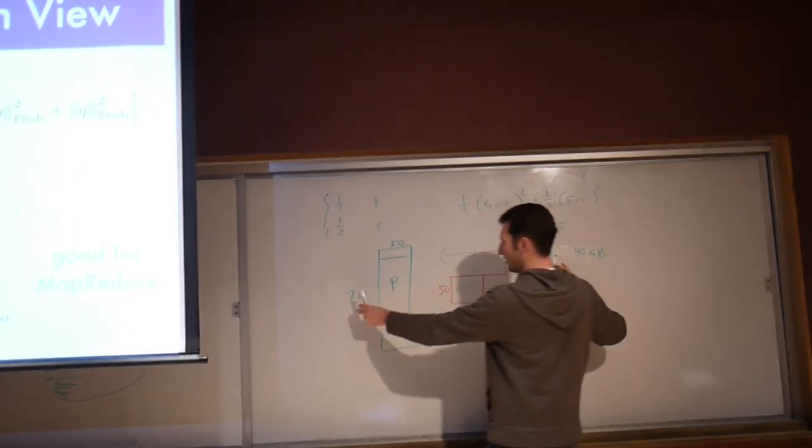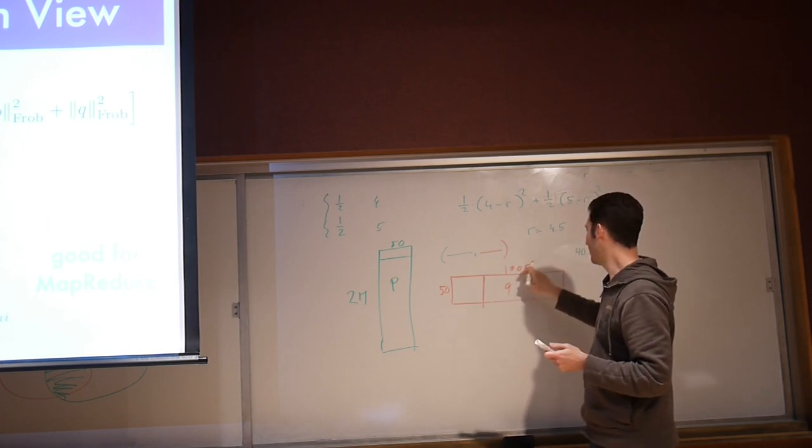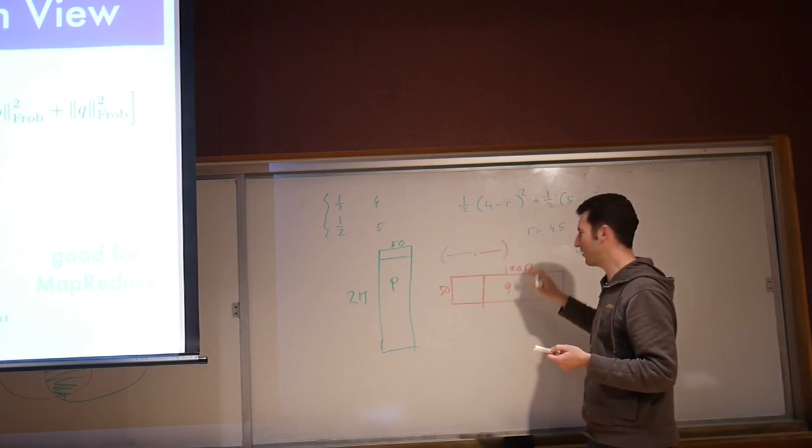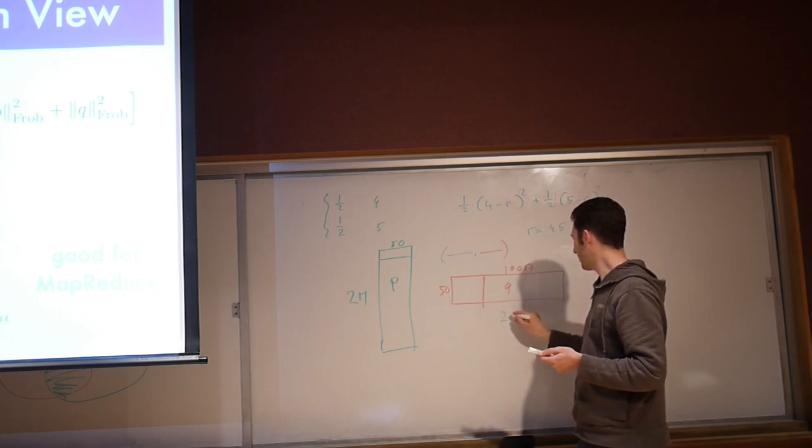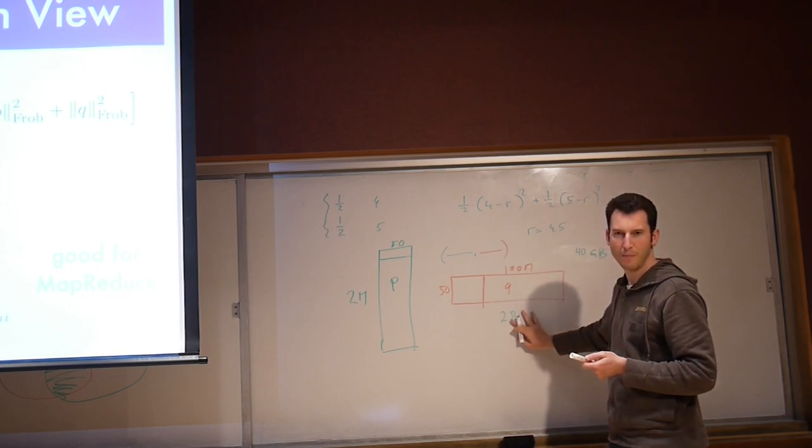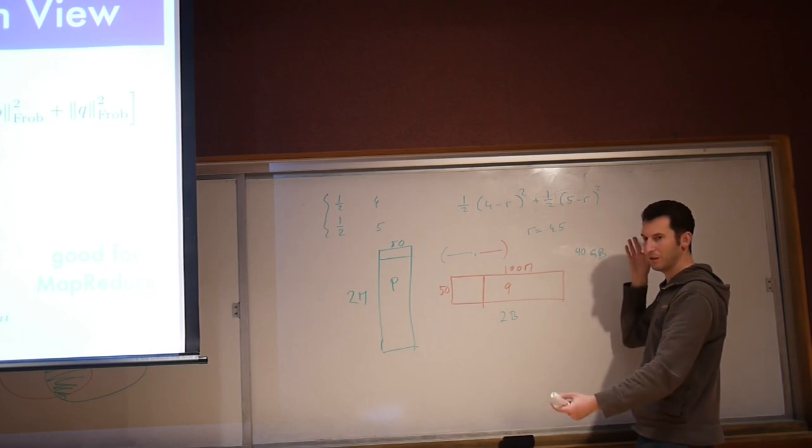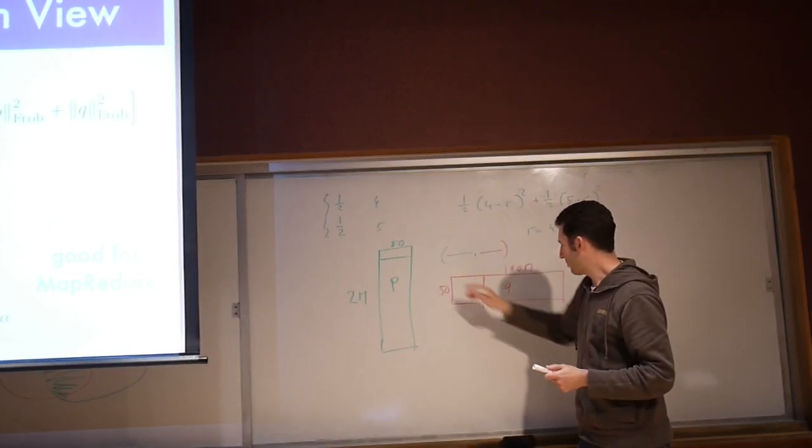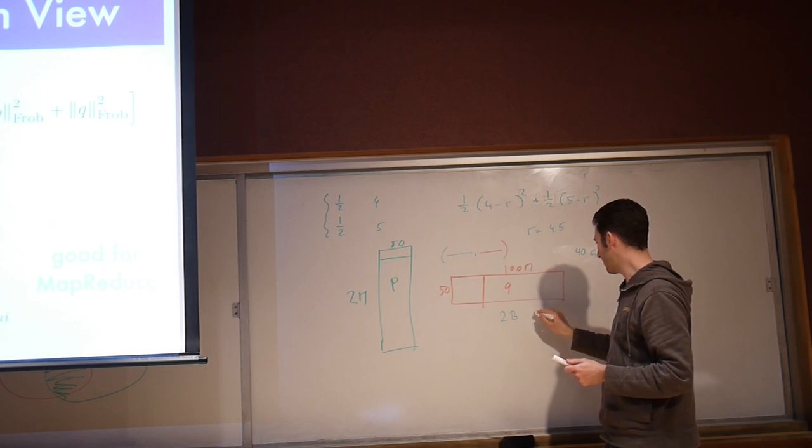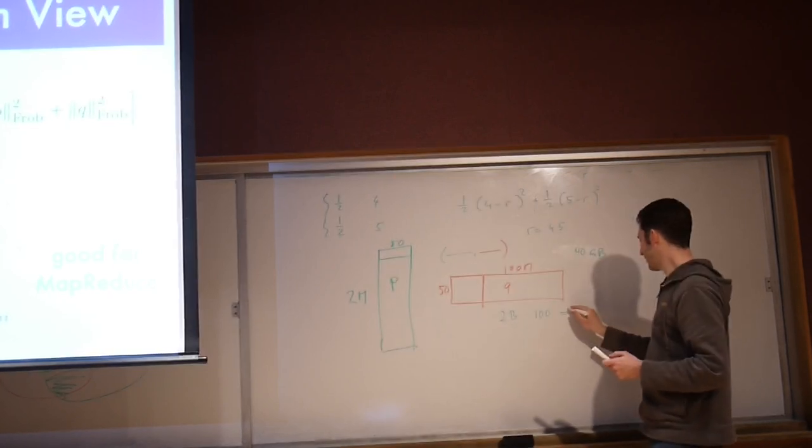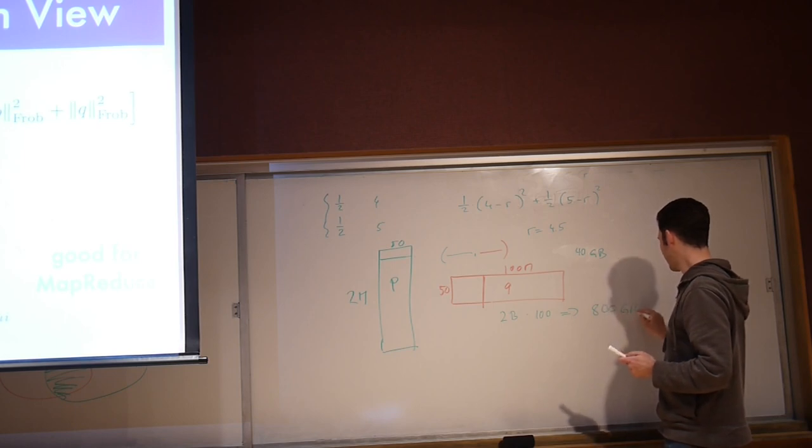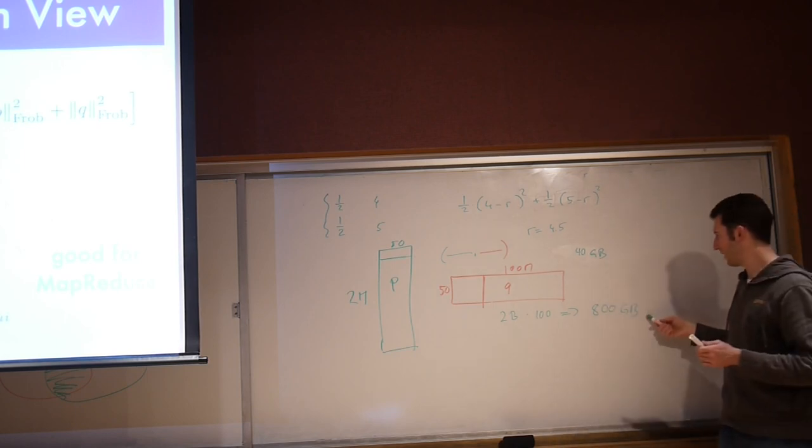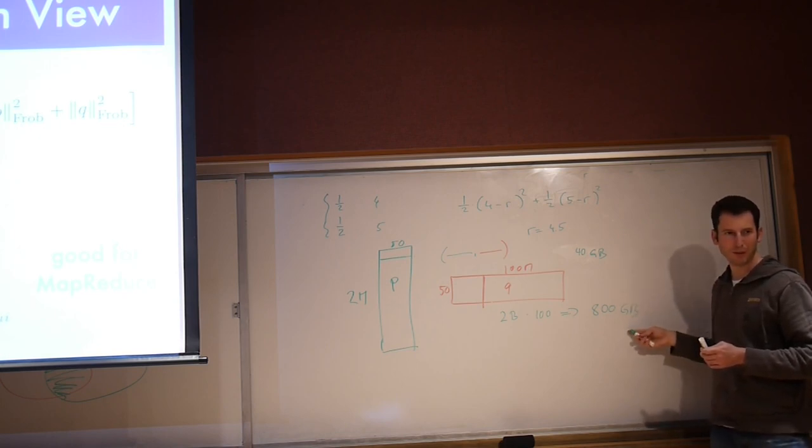Now, if we have that much data, we might very well have way over - if each user rates maybe 20 or 30 movies, we might have something in the order of 2 billion ratings. And MapReduce would have to store all the corresponding rating vectors present for all the users and vice versa. So you need all those pairs. Let's say we are smart, so we need this times 100. We have 200 billion, so basically 800 gigabytes.